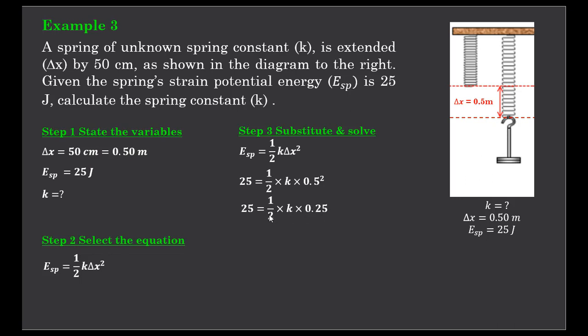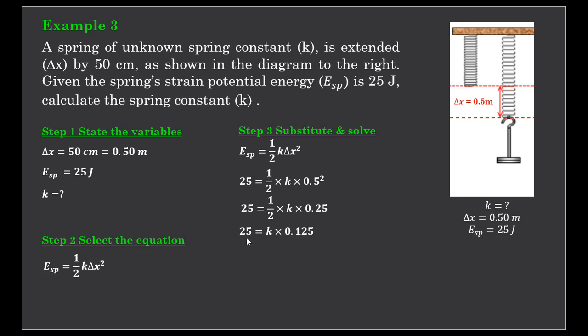Let's multiply the 0.25 by a half to simplify that even further. We have 25 is equal to k times 0.125. To get k by itself, instead of times it by 0.125, we divide it across the other side by 0.125. So now our spring constant k is equal to 25 divided by 0.125, which gives us a value of 200 newtons per meter.